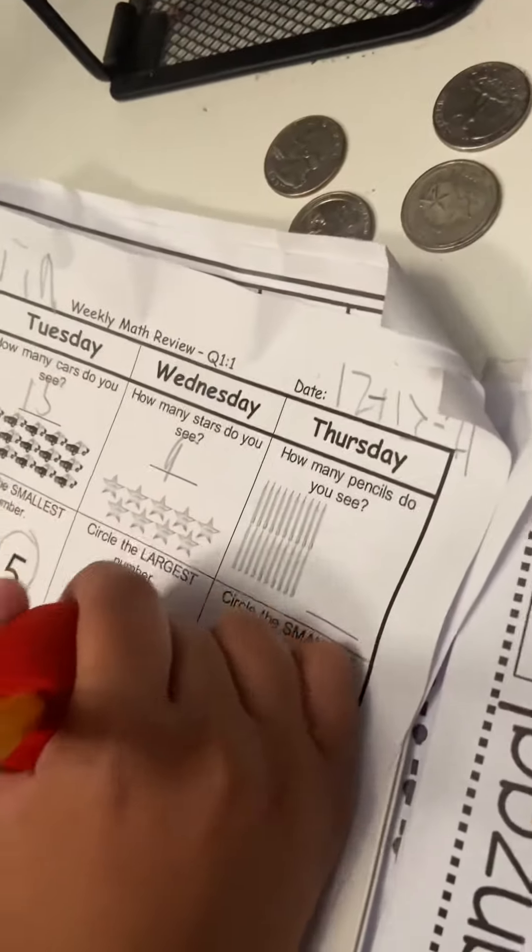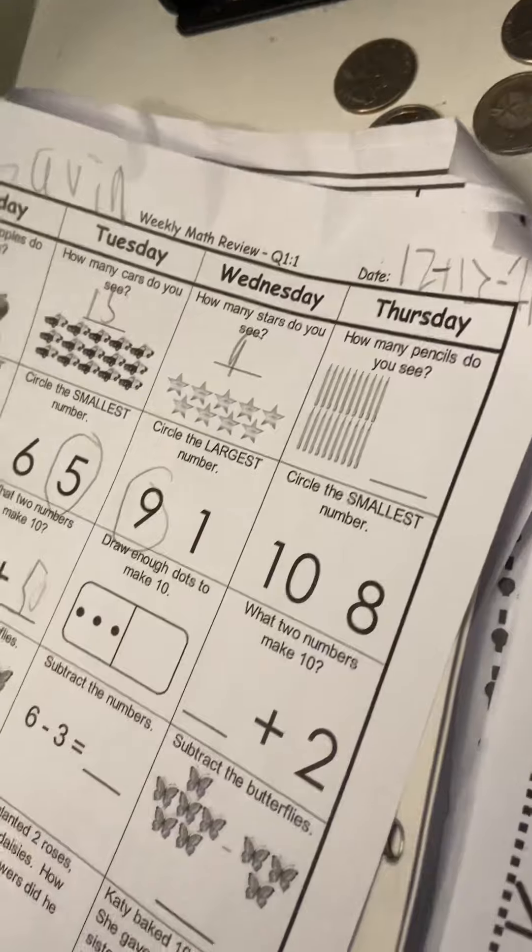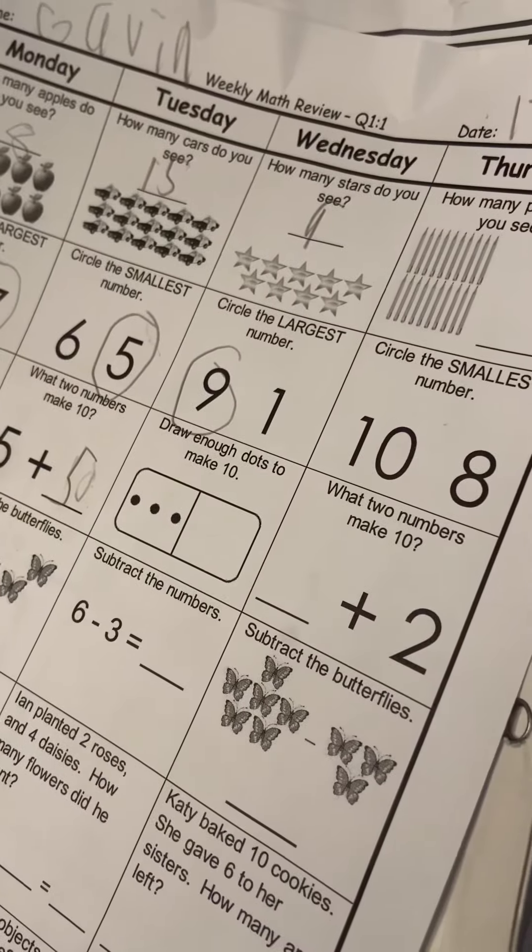Nine. Circle the largest number. Okay, draw enough dots to make ten.